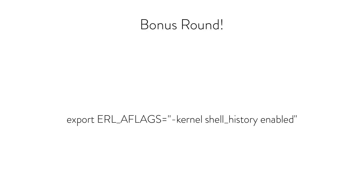As a bonus round item, this is a small thing but I'm already hooked on it just in the last week of using it. If you set the environment variable ERL_AFLAGS equals kernel shell_history enabled — I just put this in my .bashrc — it gives you shell history between runs. When you exit the shell and come back in, you just press the up key and you have your shell history from the last run right there. This has already saved me so much time and annoyance. I'm so used to this from other REPLs and shells that I'm amazed it took until 2017 to get it, but we have it now.